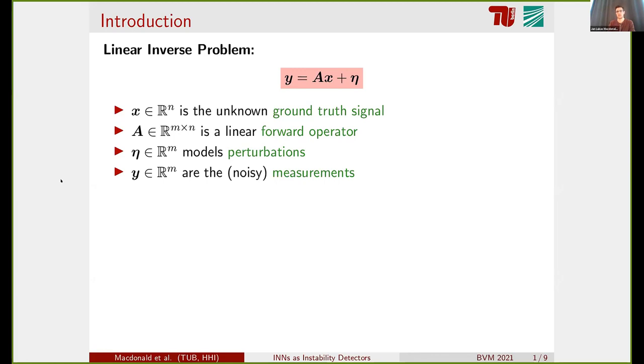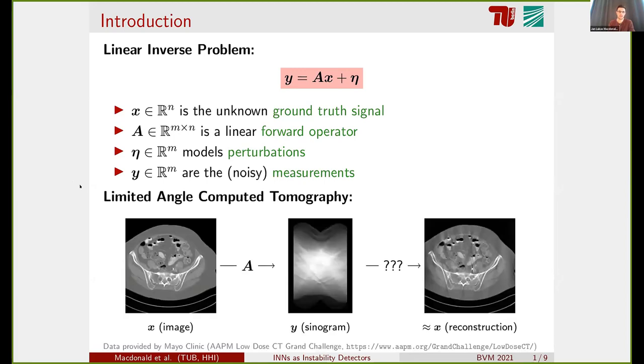The particular inverse problems that I want to use as a showcase in this talk is the limited angle computed tomography problem, where we are given measurements that can be described by a discrete Radon transform. We get the sinogram data, and the goal is to reconstruct the CT image from that. To make the problem even harder, we have the limited angle case where we don't have the full data. You see these black bars indicating that we could not measure all the angles. This results in very visible artifacts in the reconstruction if you would just consider a standard reconstruction method like the filter back projection.